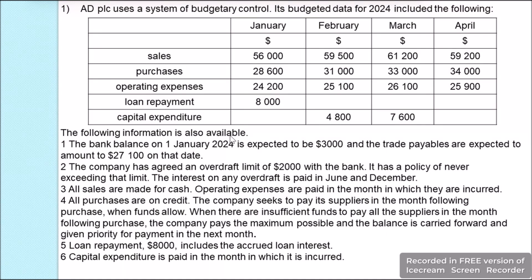The following information is also available. The bank balance on 1 January 2024 is expected to be $3,000, and the trade payables are expected to amount to $27,100 on that date. The company had agreed an overdraft limit of $2,000 with the bank and had a policy of never exceeding that limit.